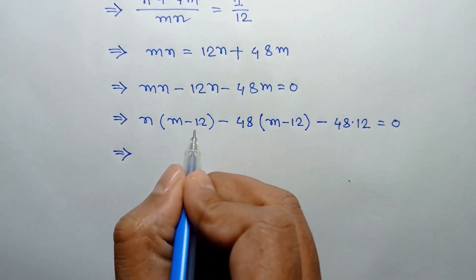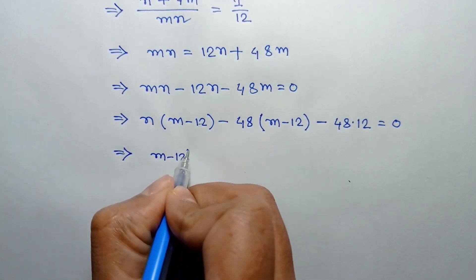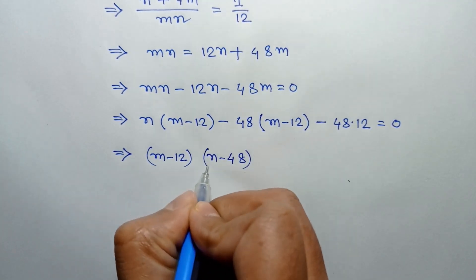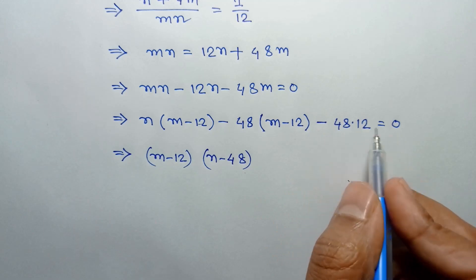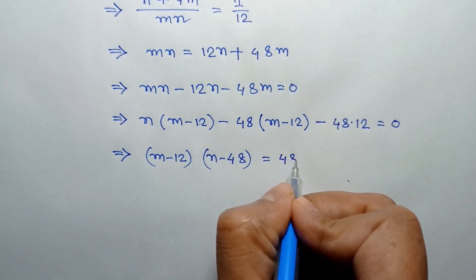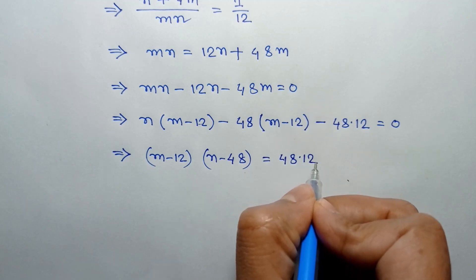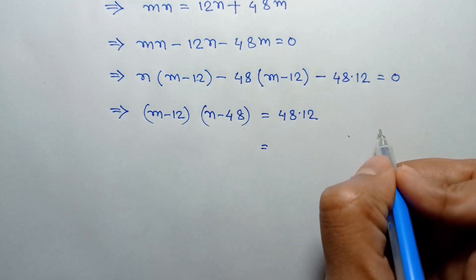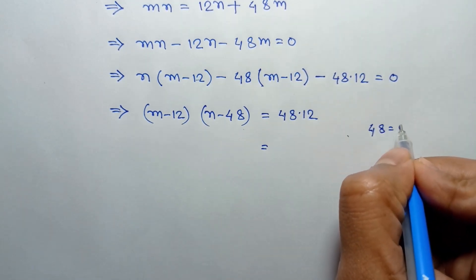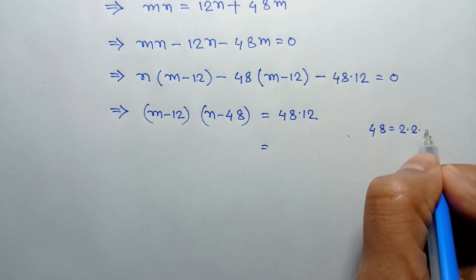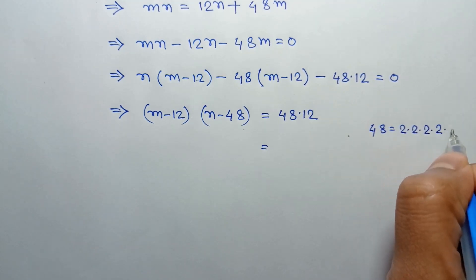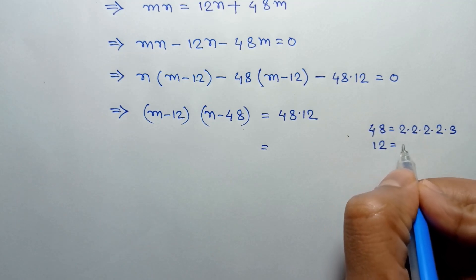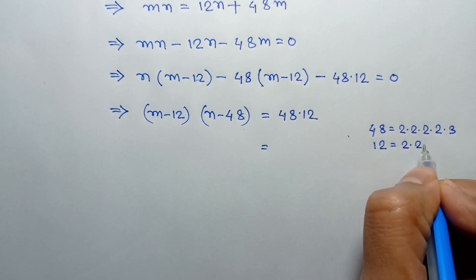Taking common (m minus 12), we can write (m minus 12) times (n minus 48). Taking 48 times 12 to the right side, we get (m minus 12)(n minus 48) equals 48 times 12, which equals 576. The prime factorization of 48 is 2 × 2 × 2 × 2 × 3, and the prime factorization of 12 is 2 × 2 × 3.